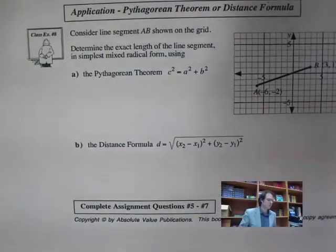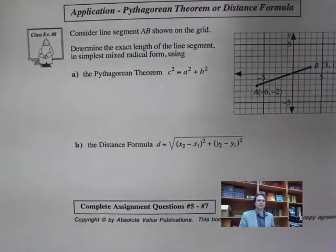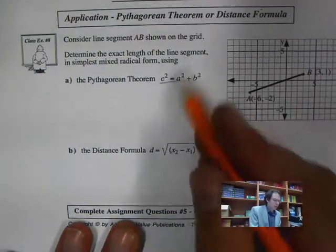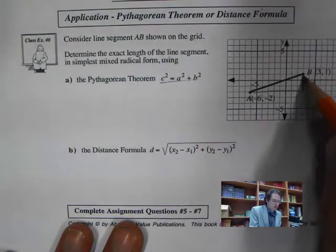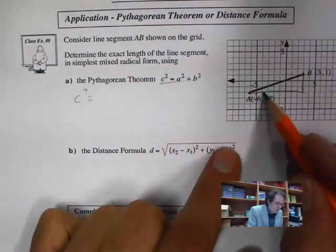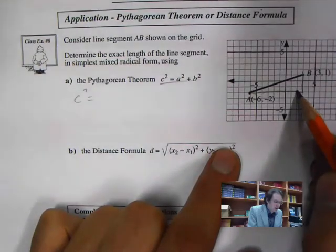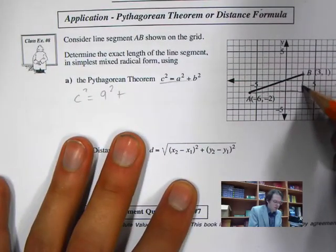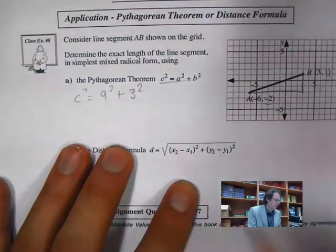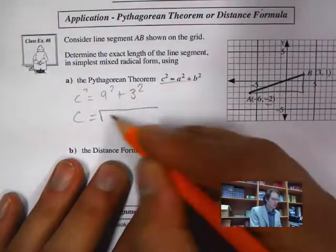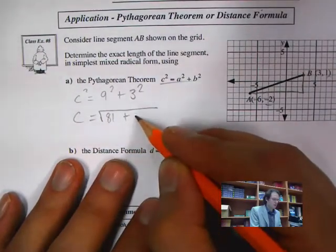The next question asks for the exact length of a line segment on a grid using the Pythagorean theorem. This is my hypotenuse. Counting the grid spaces, we have 9 across and 3 up, so c squared equals 9 squared plus 3 squared, which is 81 plus 9.